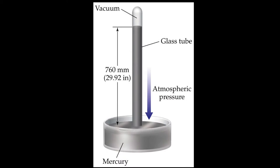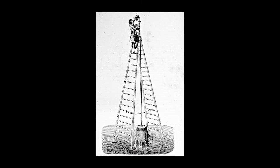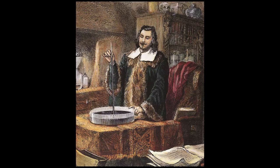Torricelli conducted his first barometric experiments using a tube of water. Water is relatively light in weight, so a very tall tube with a large amount of water had to be used in order to compensate for the heavier weight of atmospheric pressure. Torricelli's water barometer was more than 10 meters — 35 feet — in height, which rose above the roof of his home. This odd device caused suspicions among his neighbors, who thought he was practicing witchcraft. In order to keep his experiments more secretive, Torricelli deduced that he could create a much smaller barometer using mercury, a silvery liquid that weighs 14 times as much as water.